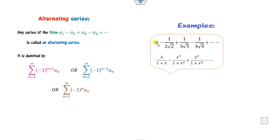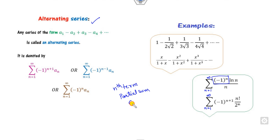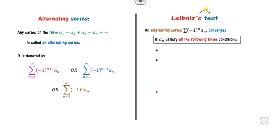For example, you can see the first term is positive, then negative, then positive, then negative — that is the alternating series. Remember, the tests we have discussed so far — nth term test, partial sum sequence, geometric series, ratio test, root test — are not applicable for alternating series. For that, we need the Leibniz test, which is applicable only for alternating series.